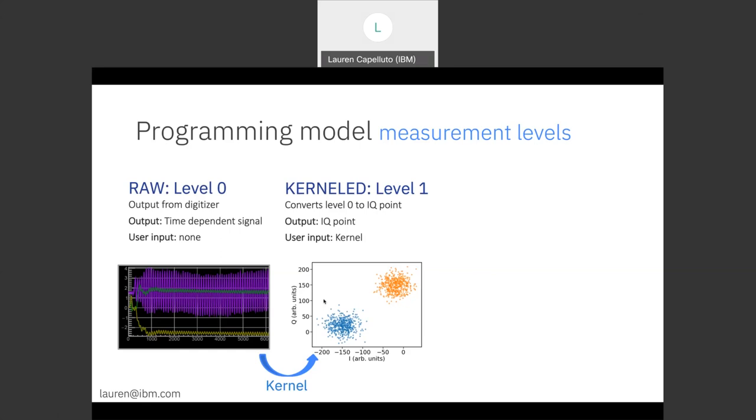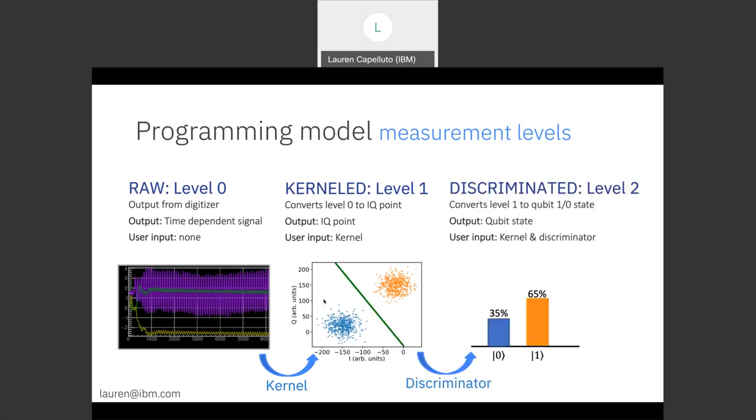Using that, we can build a discriminator. So this is building a threshold in this data where any new point to the left of that green line is going to be classified as the ground state and anything to the right or the top right of this scatter plot will be classified as the excited state.